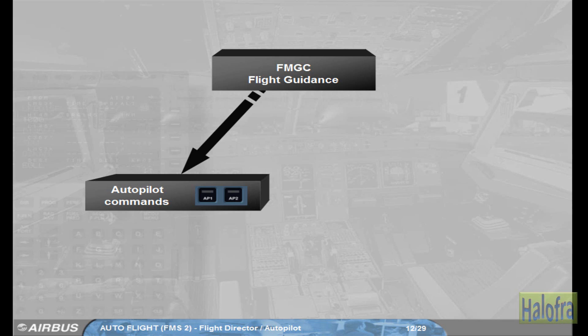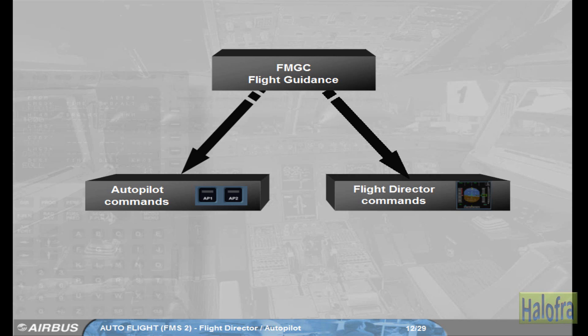The FG also drives the flight director FD symbols displayed on either PFD. The flight director is an assistance provided to the pilots to accurately hand-fly the aircraft along a given segment of a trajectory. The flight director provides guidance orders to the pilots as a function of the guidance modes and targets selected on the FCU.